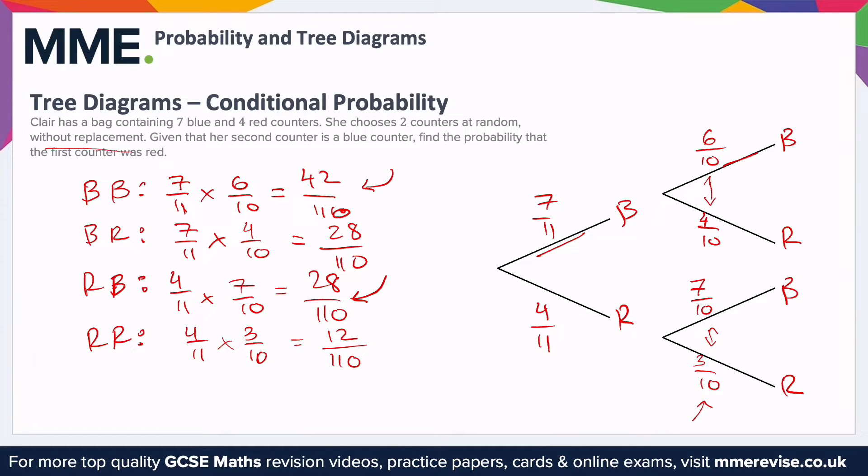Our numerator is the single outcome, red then blue, as we want the probability that the first counter was red. So that's going to be on the top, this value from here.